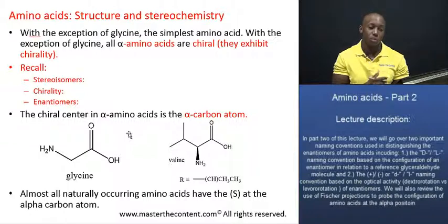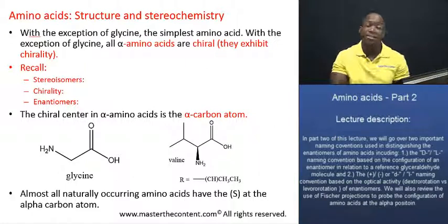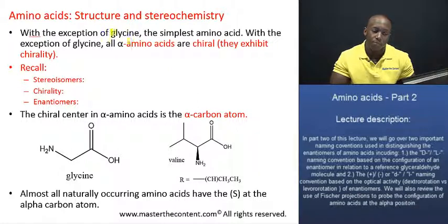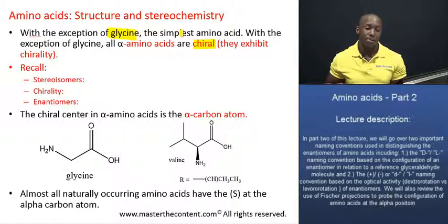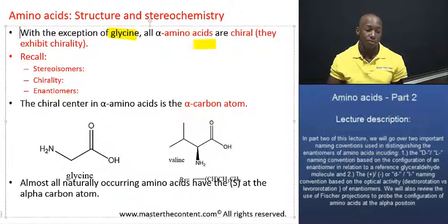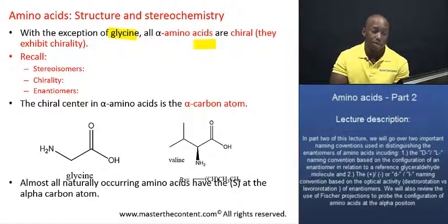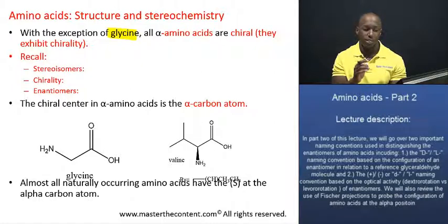We're going to probe the structure and the stereochemistry of amino acids. With the exception of glycine, which is the simplest amino acid, all alpha amino acids are chiral, or they exhibit chirality. Before we move ahead, you have to understand a few important concepts in relation to stereochemistry.